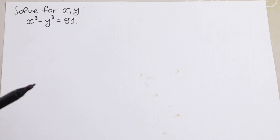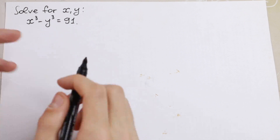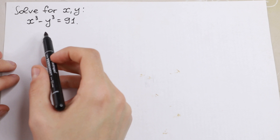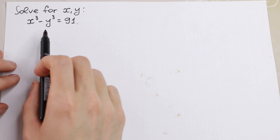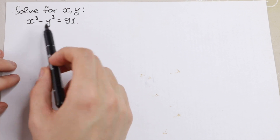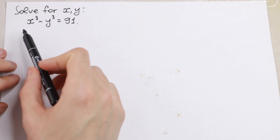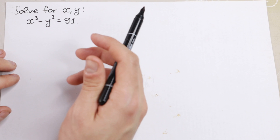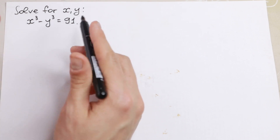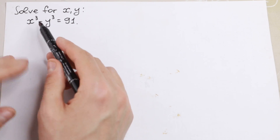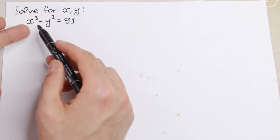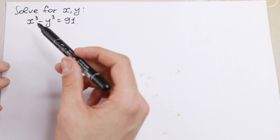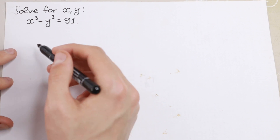Hello everyone and welcome back to Higher Mathematics. In this video we are going to solve this interesting algebra problem. We need to solve this for x and y. We have x³ minus y³ equal to 91. We have different variables, x and y.